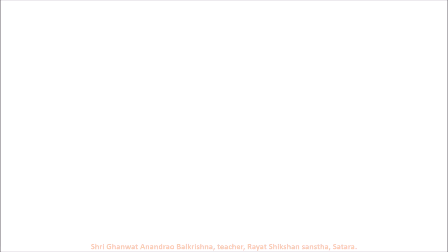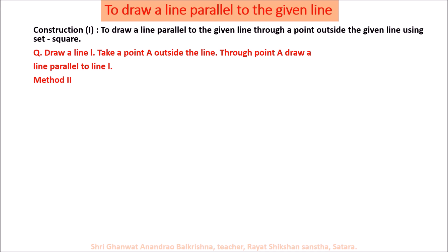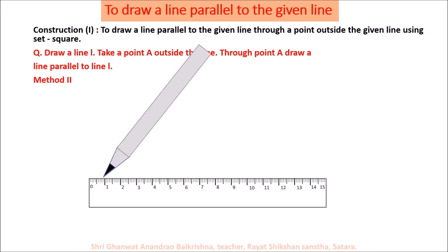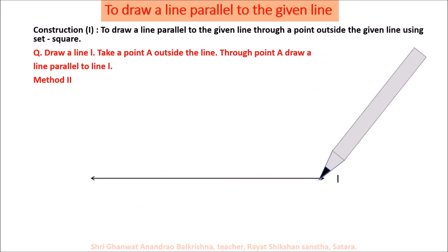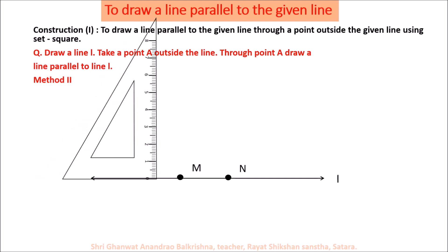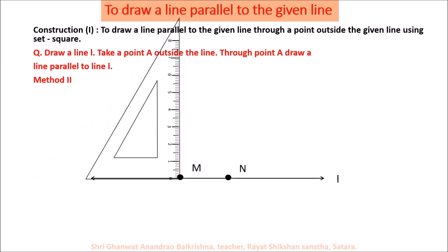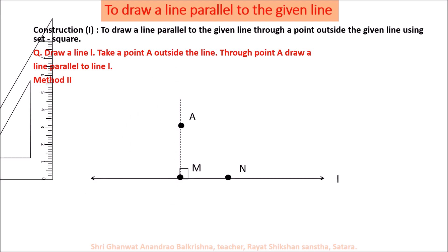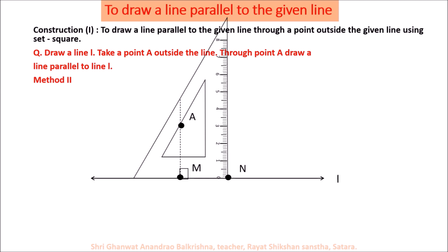Method two: take a ruler and draw line L. Take two distinct points M and N on line L. Use the set square to draw a perpendicular to line L through point M. Take any point A on this perpendicular line. Then use the set square again to draw a perpendicular to line L through point N.